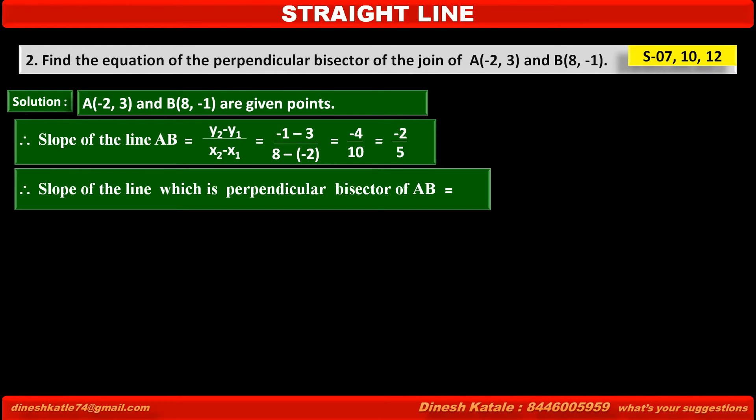Therefore, slope of the line which is perpendicular bisector of AB is equal to 5 upon 2, because if the lines are perpendicular, then product of their slopes, that is M1 into M2, is equal to -1.